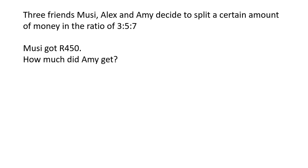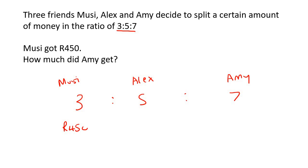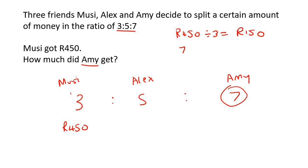Let's practice a few more. Three friends — Moosey, Alex and Amy — decide to split a certain amount of money into the ratio of three to five to seven. They tell us that Moosey got 450 Rand. Moosey has three parts, so we can work out the price per part: 450 divided by three equals 150 Rand per part. Amy has seven parts, so Amy gets 150 multiplied by seven, which is 1,050 Rand.